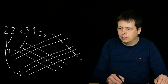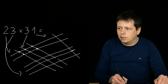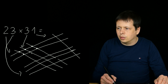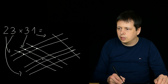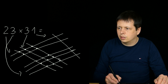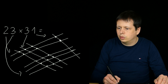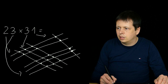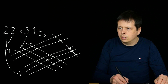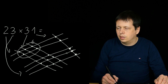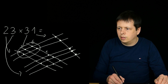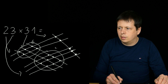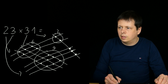Now sum the intersections again. On the left we have six intersections. In the middle we have nine. Then we have two, and on the right we have three. So the counts are: six, nine, two, three.